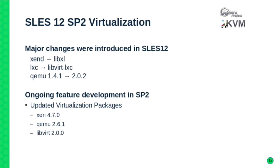Those familiar with the SUSE environment know there were significant changes between SLES 11 and SLES 12. From the Xen perspective, we dropped the Xen D daemon and moved to LibZen Lite. XM commands changed to XL commands. We also converted our container story from LXC to LibVirt LXC — and we still support LibVirt LXC in addition to Docker. Docker is for application containers; LibVirt LXC covers system containers under our virtualization umbrella.